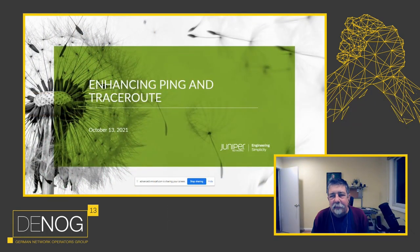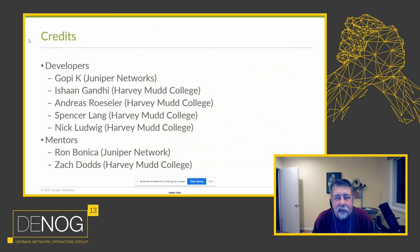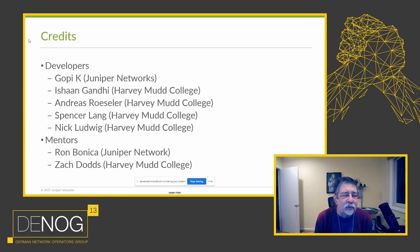I'd like to talk to you this morning about some enhancements we've done to ping and traceroute. You'll find these enhancements in some versions of Linux, Wireshark, TCP dump, and Junos, our company's operating system. Before I start, I'd like to give credit to the people who actually did the work: a developer from Juniper Networks, four undergraduates from Harvey Mudd College who did the commits to Linux and Wireshark, and Professor Zach Dodds, whom I mentored the project with.